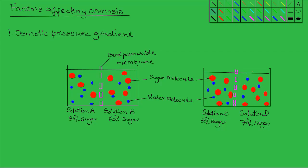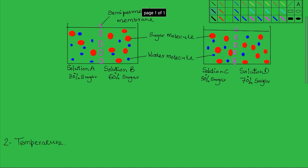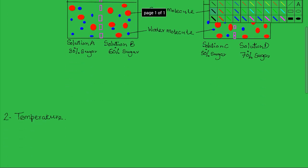Hello and welcome to this lesson. In this lesson we are going to look at the factors affecting the rate of osmosis. There are two main factors that affect the rate at which movement of water molecules takes place, and these two factors are osmotic pressure and temperature.